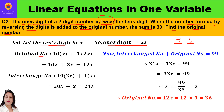To form the original number, multiply 10 with the tens digit (x) and 1 with the ones digit (2x). So 10 into x is 10x, and 1 into 2x is 2x. Therefore 10x plus 2x equals 12x, so 12x is the original number. For the interchange number, multiply 10 with the ones digit (2x) and 1 with the tens digit (x). That gives 20x plus x, which equals 21x.